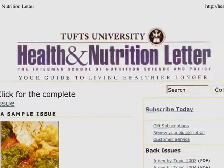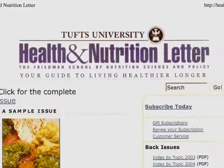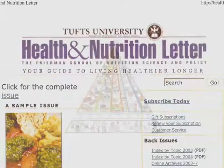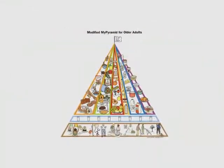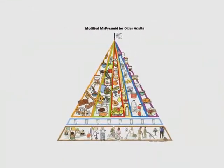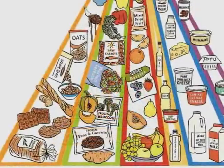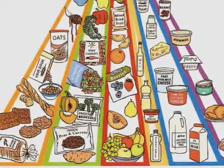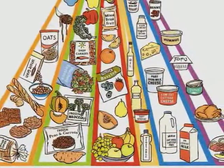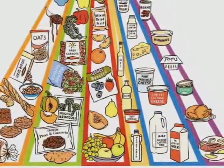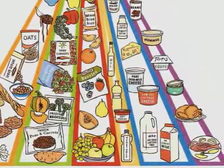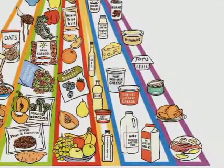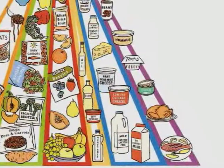Nutrition experts at Tufts University developed a new version of the food pyramid with dietary recommendations for people over 70. This food pyramid can be a helpful tool as you plan meals for your clients. As the pyramid shows, the foods that provide the best diet for older people are whole grains and cereals, bright or deeply colored vegetables and fruits, beans and nuts, low-fat dairy products, lean meat, fish, poultry, and eggs.